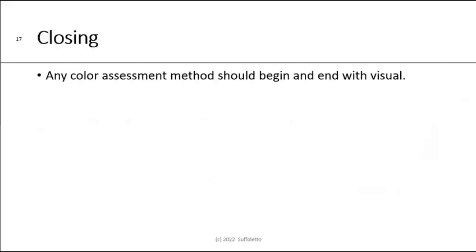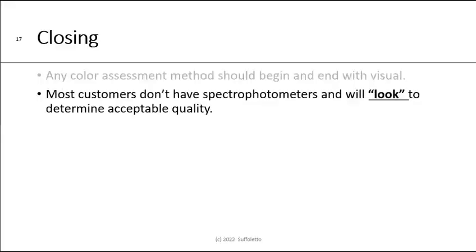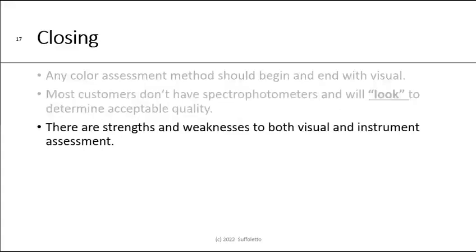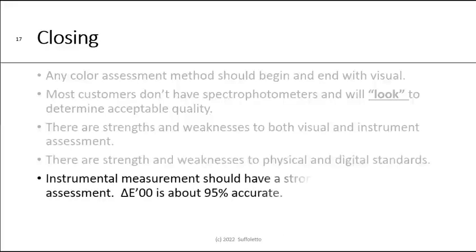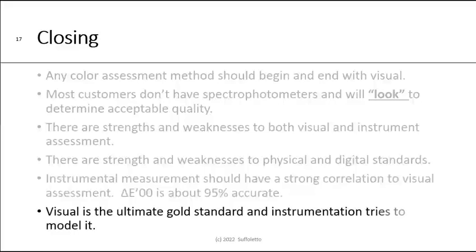In closing, any color assessment method — whether visual or instrumental — should begin and end with visual. Most customers don't have spectrophotometers, so they're going to look at the color to determine its acceptability and quality. There are strengths and weaknesses to both visual and instrument assessment. There are also strengths and weaknesses to physical and digital standards — we're seeing a trend in the industry to get away from physical standards and go to digital standards, which will be an issue if you're only using visual assessment. An instrumental measurement should have a strong correlation to visual assessment — Delta E2000 is about 95% accurate. Visual is the ultimate gold standard that instrumentation is trying to model. It's not a case of either/or — you're not going to just look at it or just measure it — it's really a case of using both technologies so that you supplement one with the other.